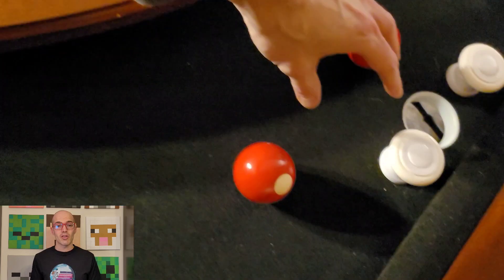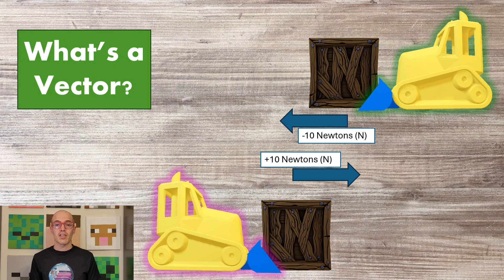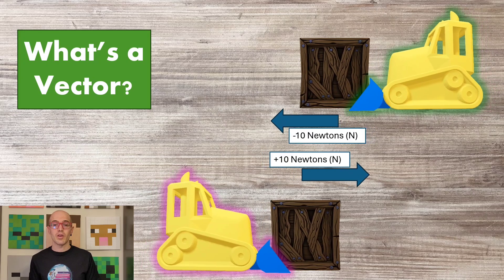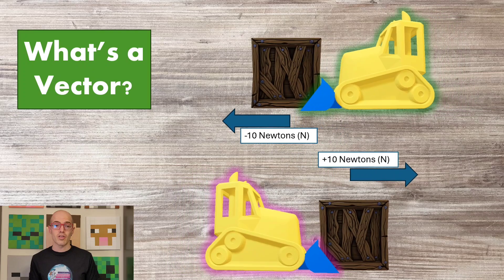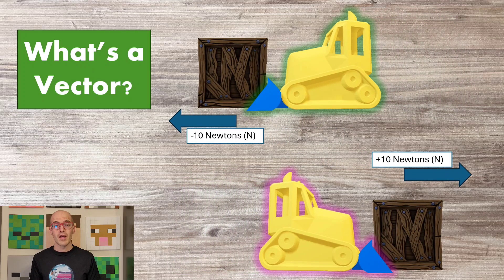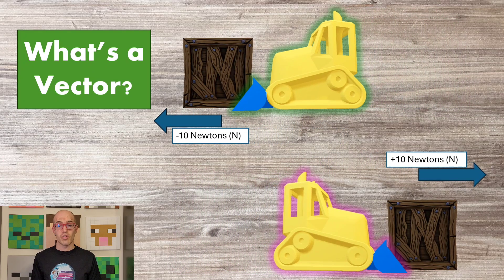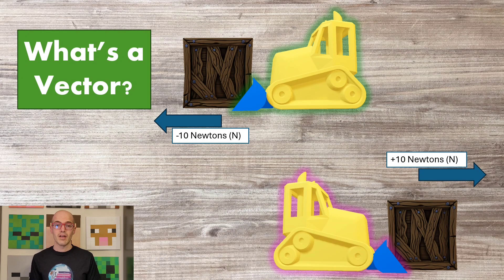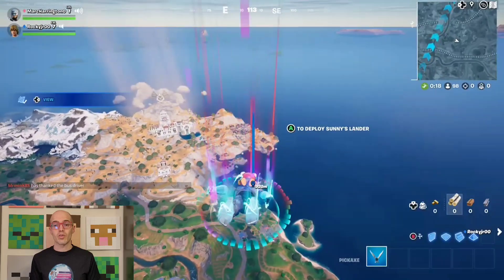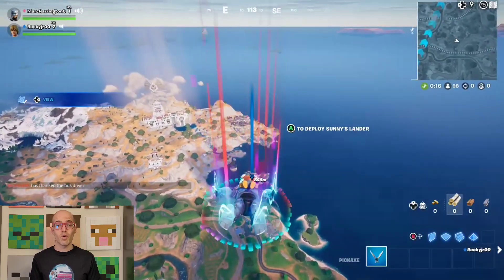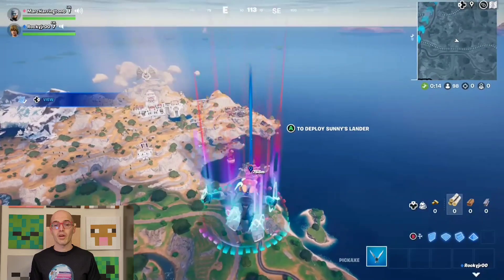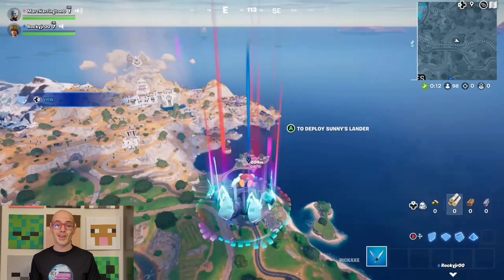Let's start with the information that force is a vector — a special mathematical value with both magnitude and direction — that describes the interaction between objects, causing changes in their motion or shape. It is measured in units such as newtons and can be classified into various types based on its origin and effect. Forces can cause objects to accelerate, decelerate, deform, or remain in equilibrium depending on their magnitude and direction.